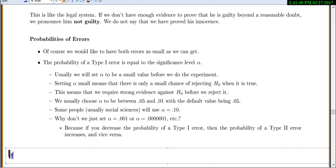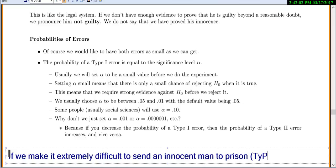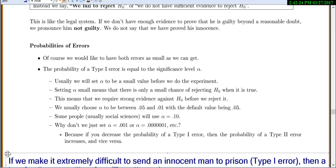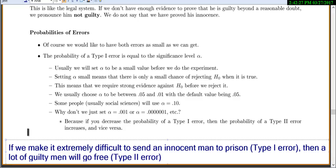If we relate this to the legal system again, if we make it extremely difficult to send an innocent man to prison, which would be a type 1 error, then a lot of guilty men will go free, which is a type 2 error. If you make it really easy to send guilty men to prison, then that means you're going to have a lot of innocent men go to prison as well. You have to balance between the two types of errors.